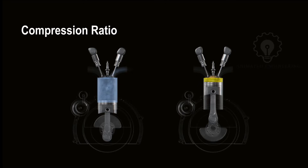For example, an engine with a compression ratio of 10 to 1 means the air-fuel mixture is reduced to one-tenth of its original volume.